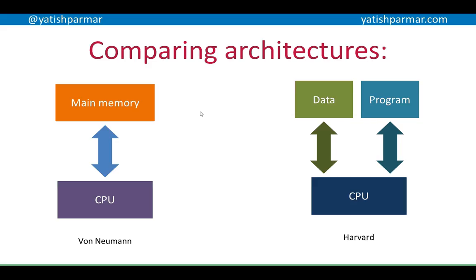If we compare the two: on the left-hand side, von Neumann architecture has main memory holding programs and data, so they're contending for control of the data bus, which slows performance down and creates a bottleneck. On the right-hand side, the Harvard architecture CPU has two separate physical memory components — one for holding the data and one for holding the program.